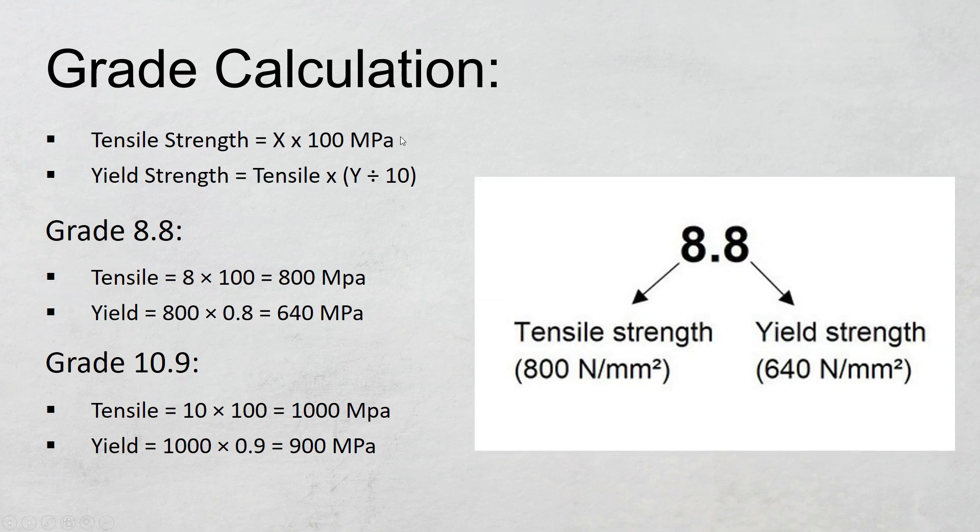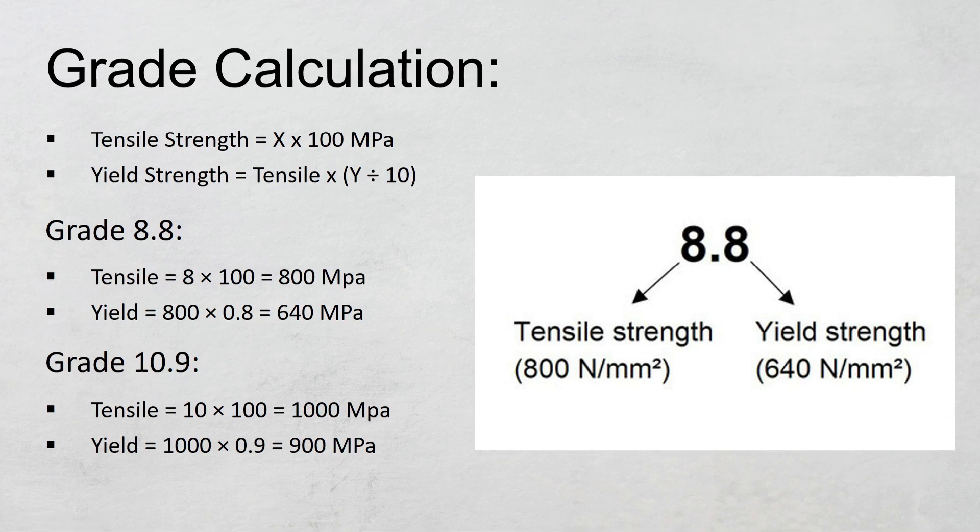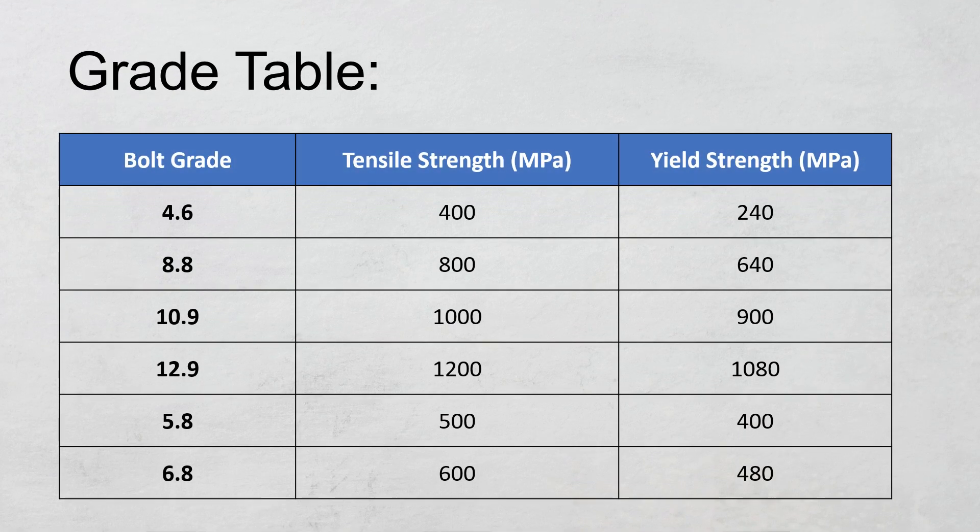One thing to remember is either you write 100 MPa or 100 N/mm²—both units are the same. So here is a quick comparison. I have created this table and you can see we have 6 bolts here: 4.6, 8.8, 10.9, 12.9, 5.8, and 6.8.